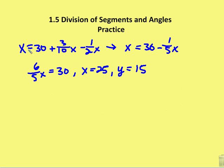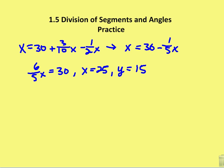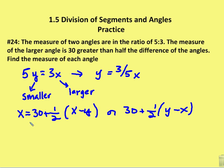Taking the second equation, x equals 30 plus one-half times (y minus x), I substitute y equals three-fifths x, arriving at x equals 30 plus three-tenths x minus one-half x. Simplifying gives x equals 30 minus one-fifth x, then six-fifths x equals 30, so x equals 25 and y equals 15. So there are two answers: one based on x equals 30 plus one-half times (x minus y), giving 37.5° and 22.5°; and the other based on x equals 30 plus one-half times (y minus x), giving 25° and 15°.